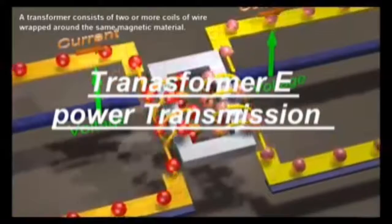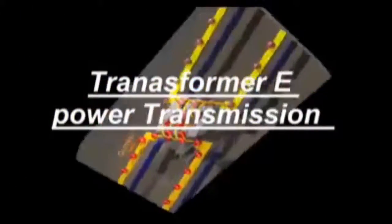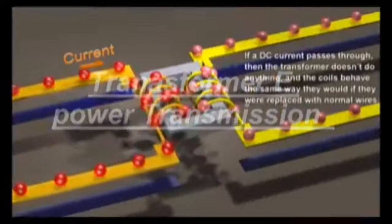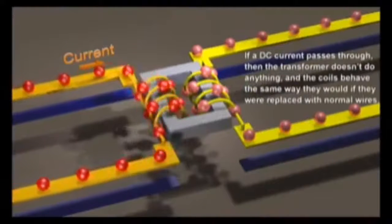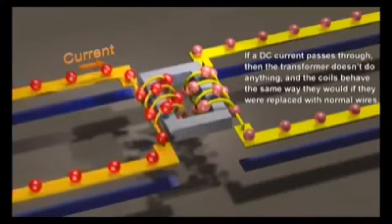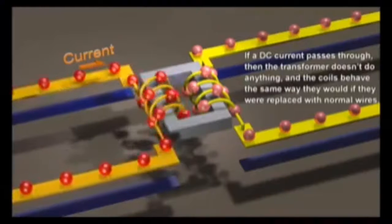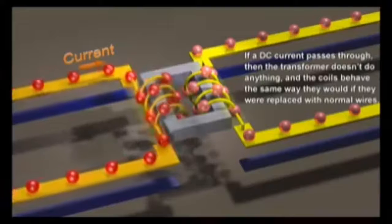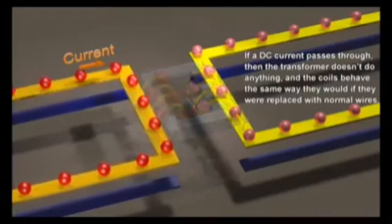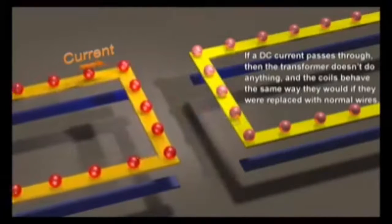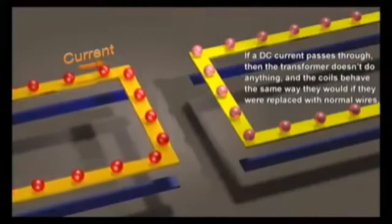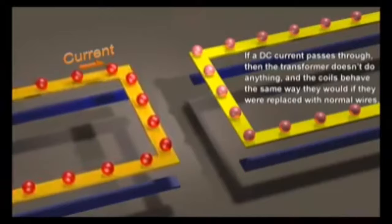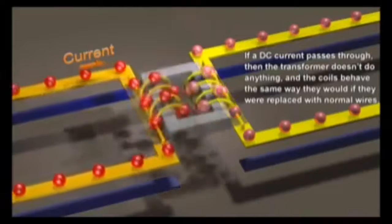When a current carrying conductor is wound around a core and another coil is wound around the same core, there will be an induced voltage across the second coil. This induced voltage arises due to magnetic flux from the current carrying coil into the core. This flux gets in contact with the second coil and causes production of electricity in the coil. By manipulating the number of turns, you can determine the amount of voltage or current that will be achieved on this second coil.